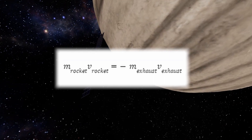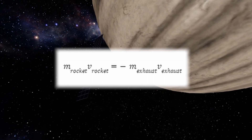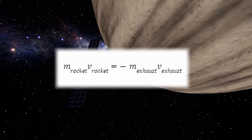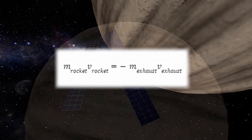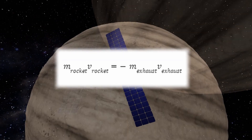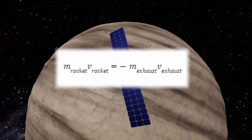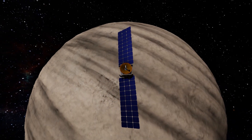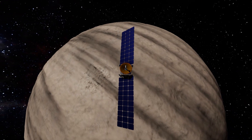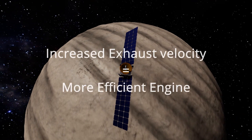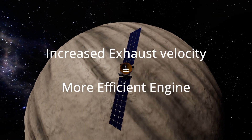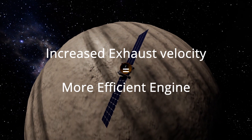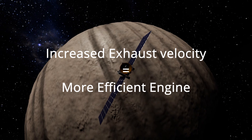Without changing the amount of fuel we have or making our rocket smaller and less heavy, the only way to make our rocket go faster using this equation is to increase the velocity of our exhaust. And this is exactly what the ion drive attempts to do.